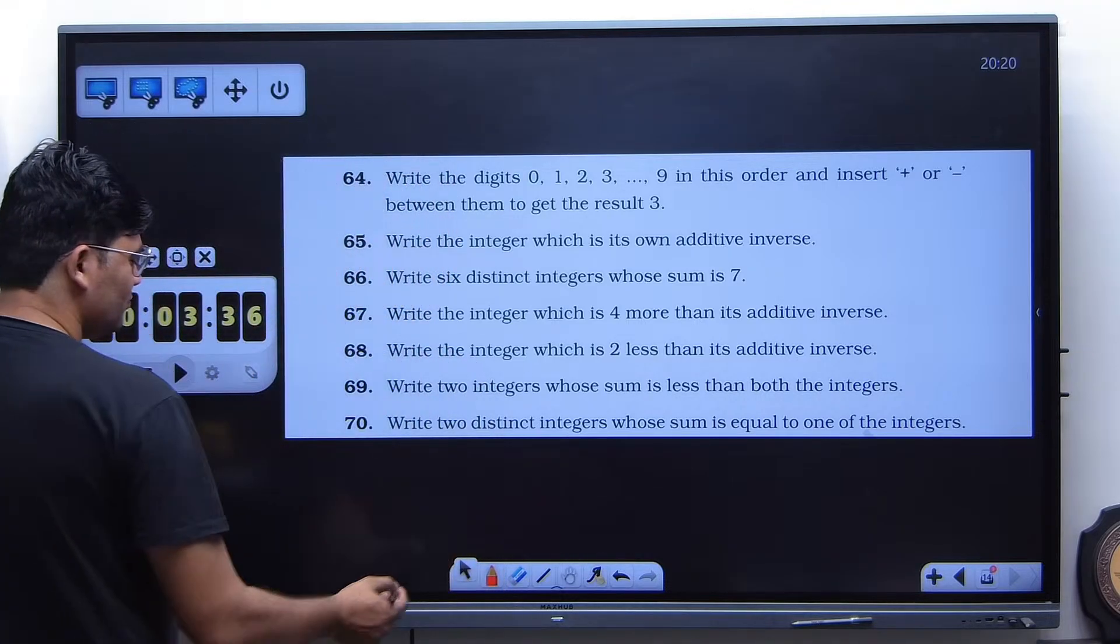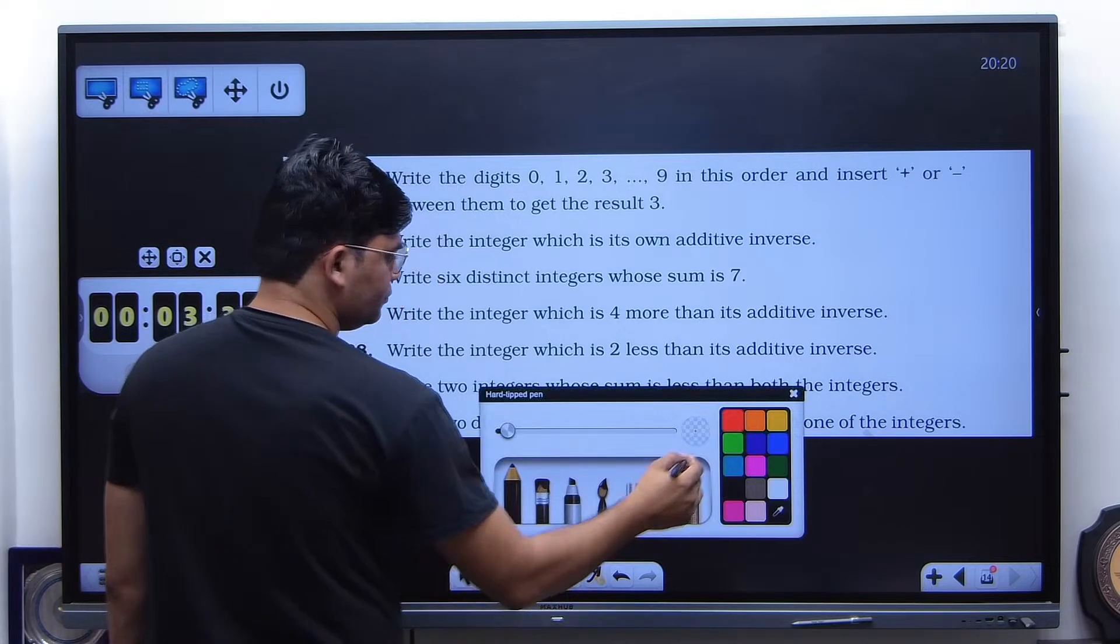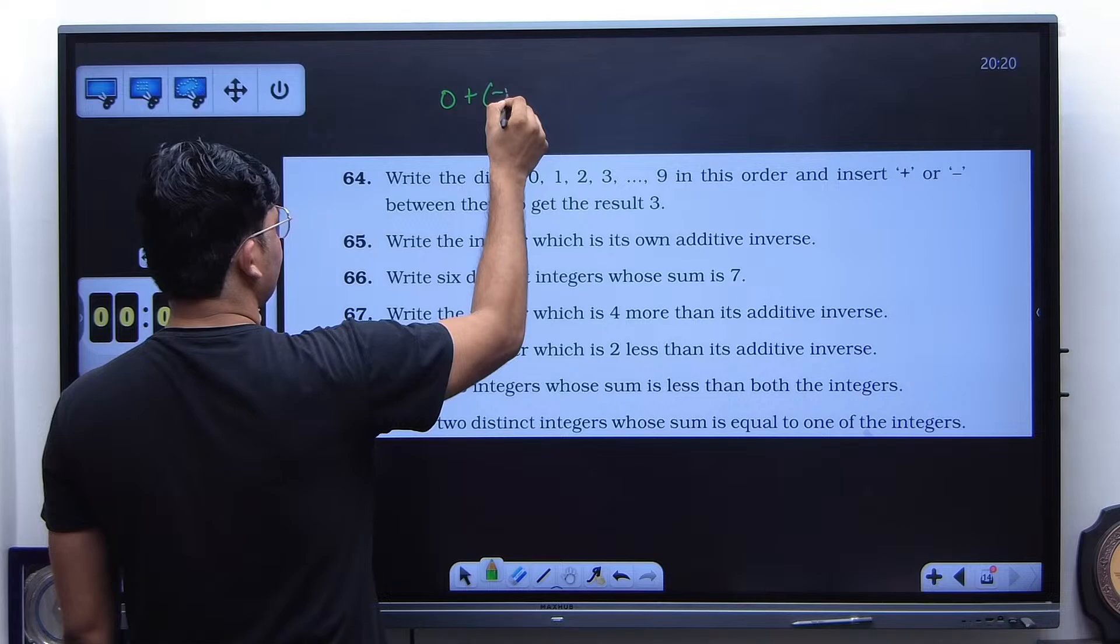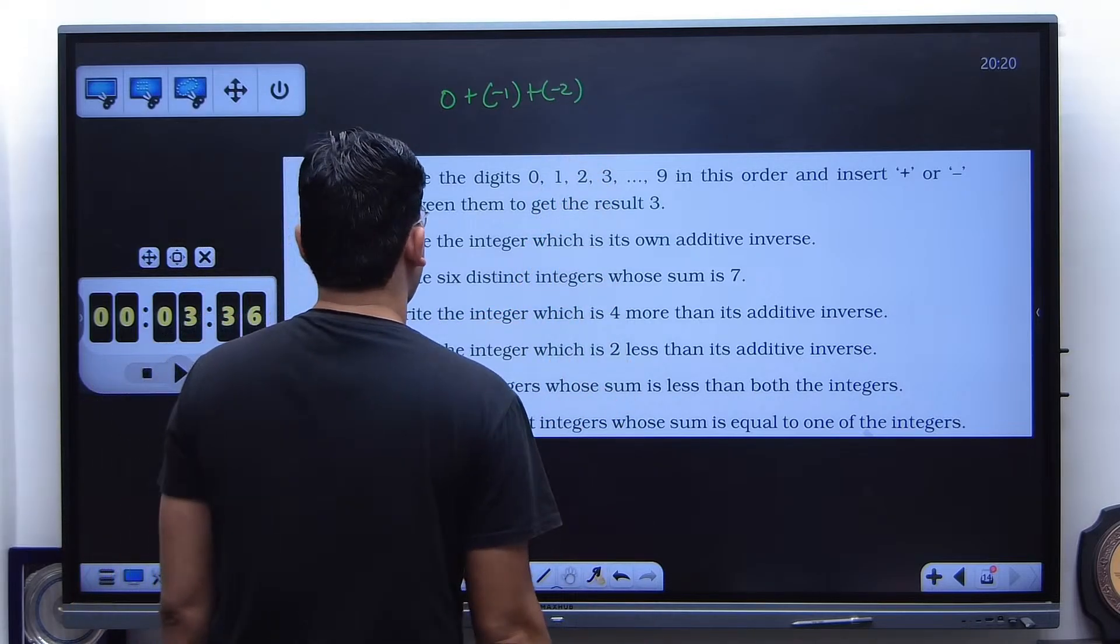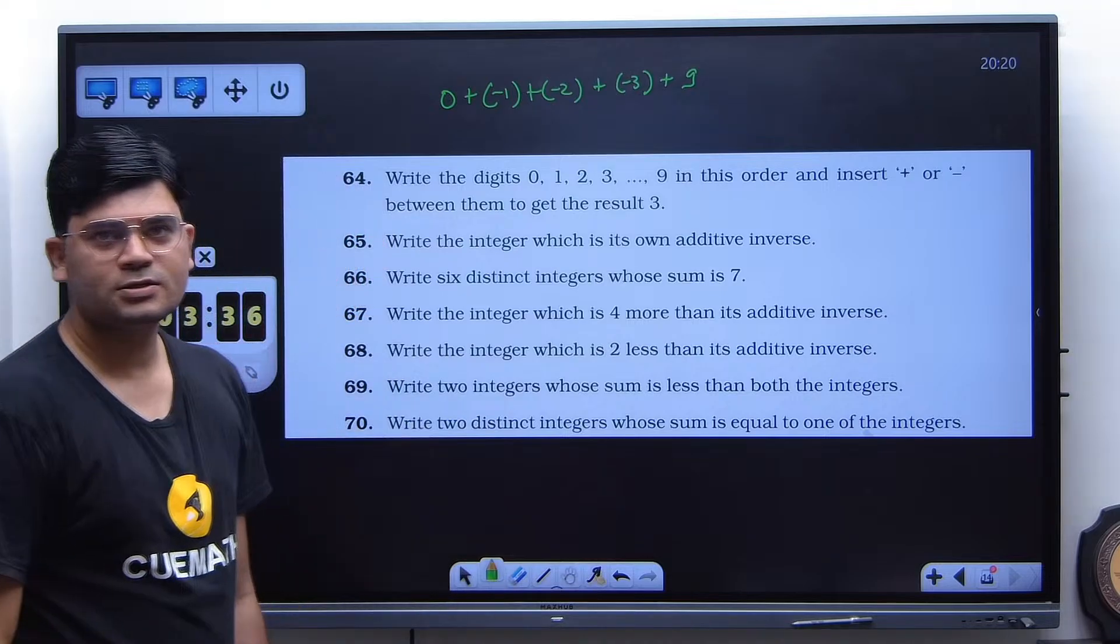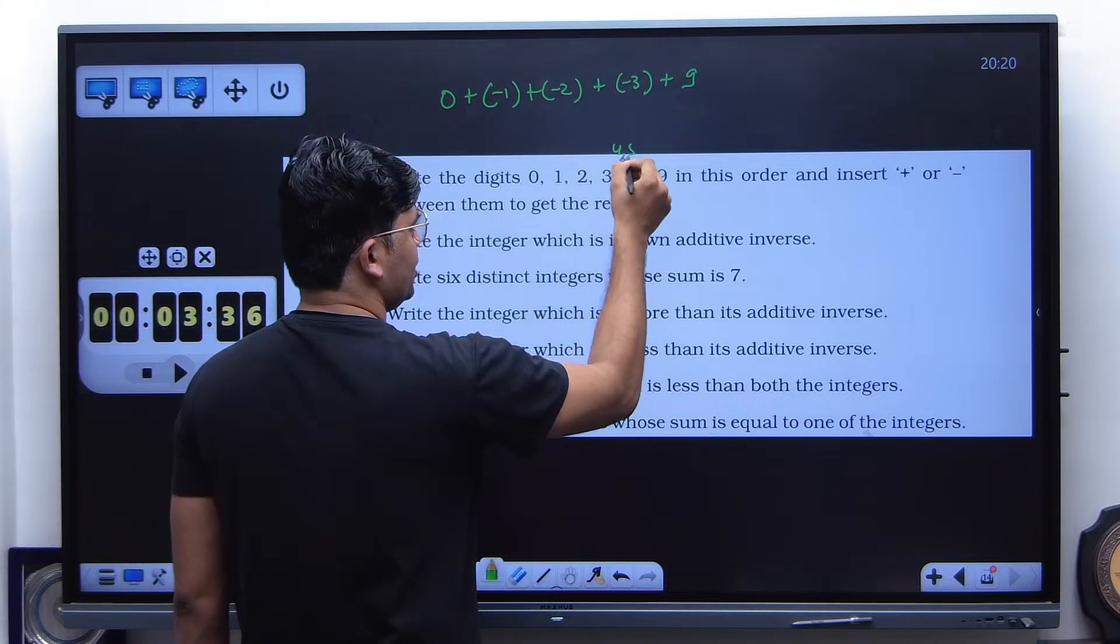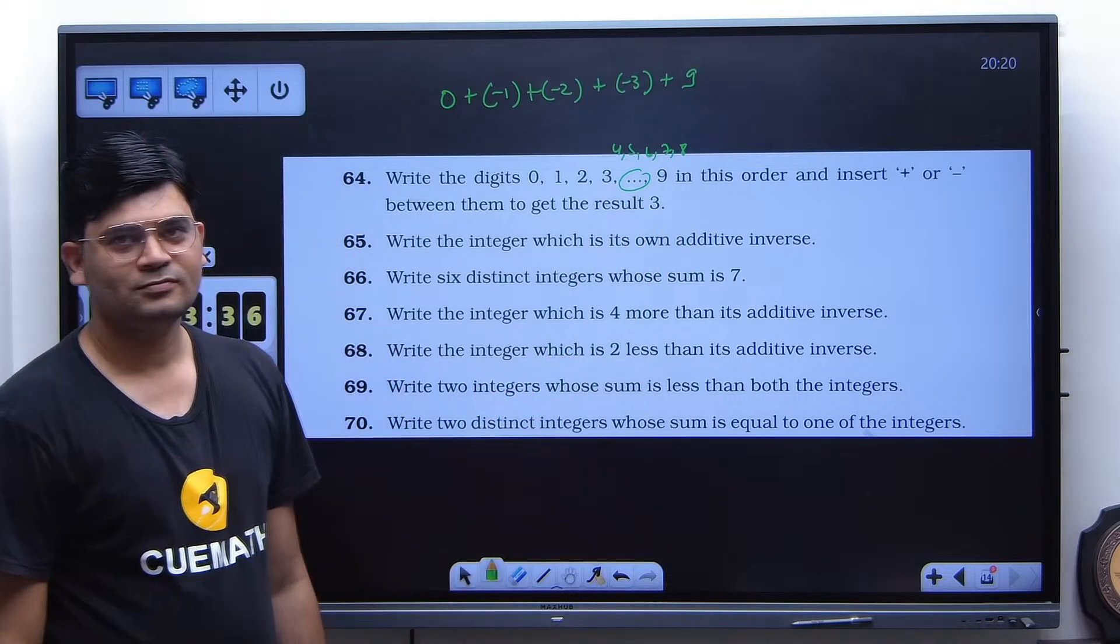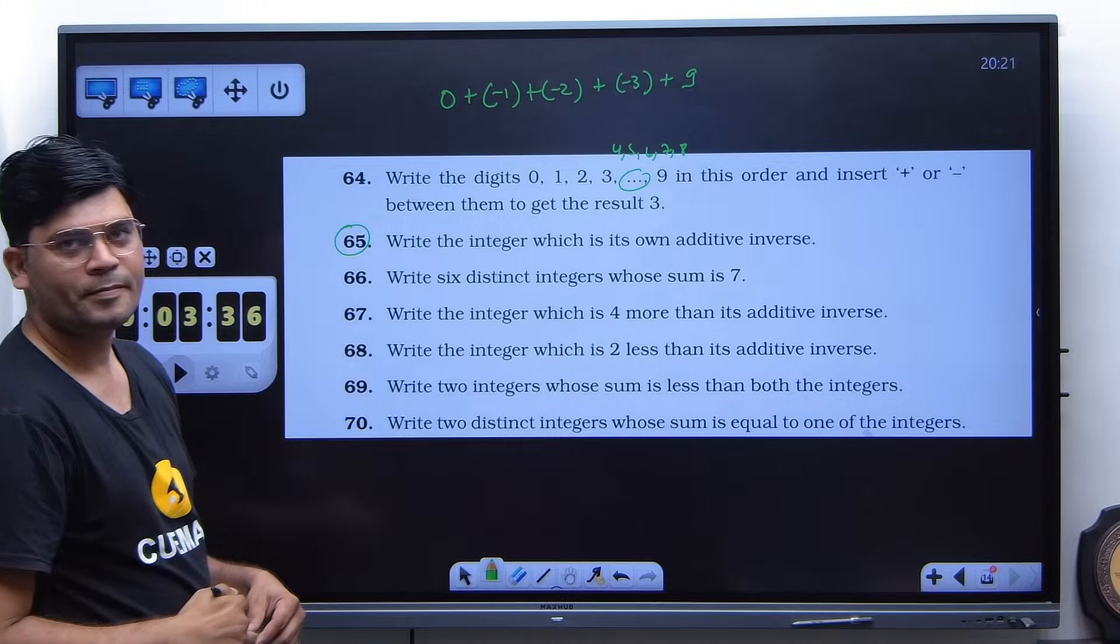64 is 0 plus minus 1. Wait, wait, wait. 0 plus minus 1 plus minus 2 plus minus 3 plus 9. Where are other numbers? Understand the question, dear. If you are being given three dots, means this series is continued. Oh, okay. To avoid the space, they have written like this. Oh, yeah, yeah. It's okay. That you can do it later on. Come to the question number 65. 0.